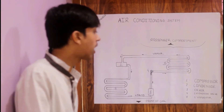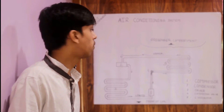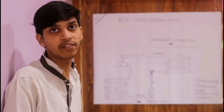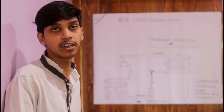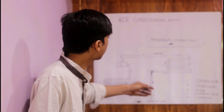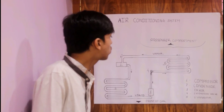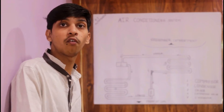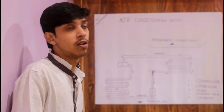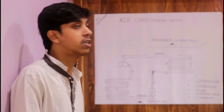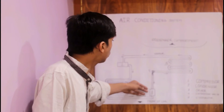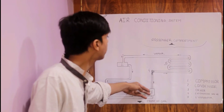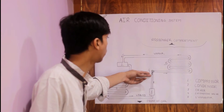The dryer is used for drying the liquid to increase the efficiency of the air conditioning system. The dryer is also a container for the refrigerant — as per the requirement, the refrigerant goes in and is released from the dryer, then it continues on to the expansion valve.